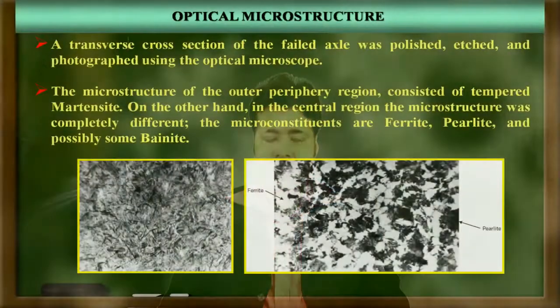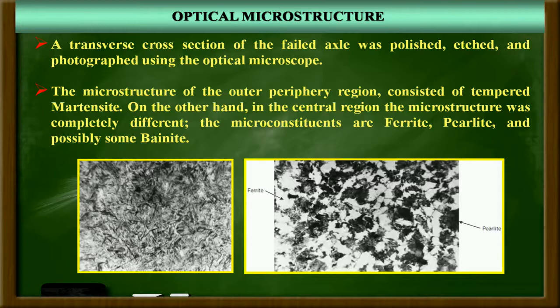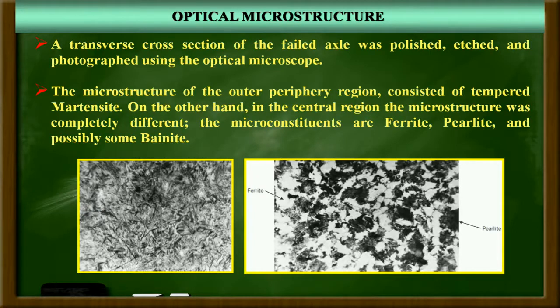We proceed to further investigation by taking samples from the failed axle to understand how the actual material should behave, leaving aside the loading conditions. First, we go for optical microscopy — we prepare, polish, and etch the sample and look under the optical microscope. We see that the periphery region of the shaft consists of tempered martensite, whereas the micro-constituents of the center or core region are mainly ferrite, pearlite, and somewhat bainite. This is evidence number one of the material.